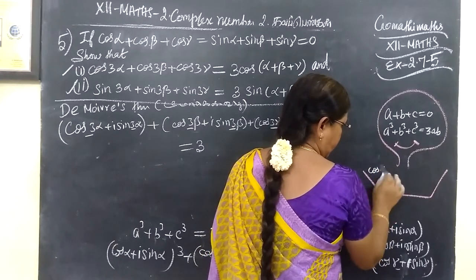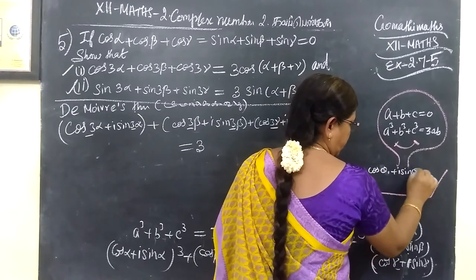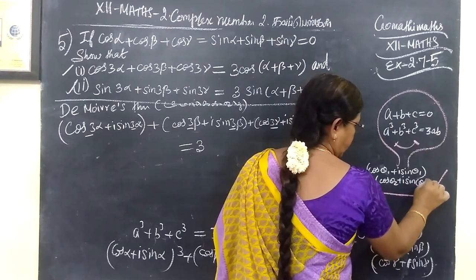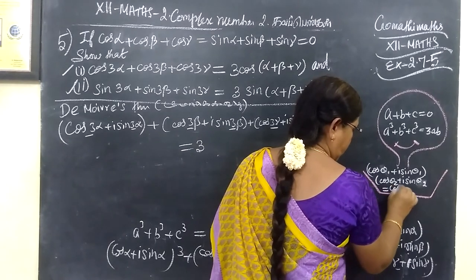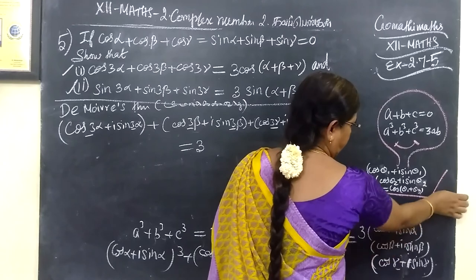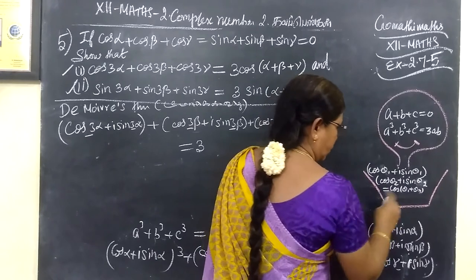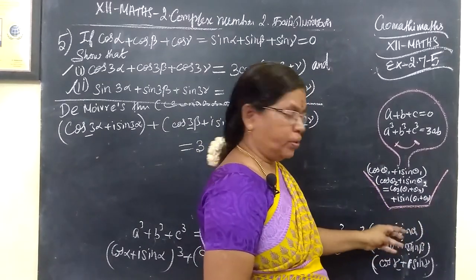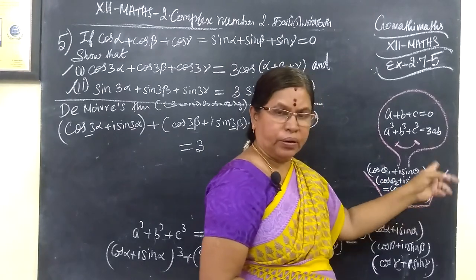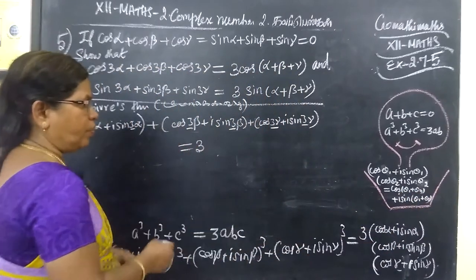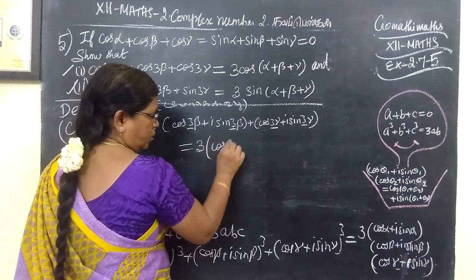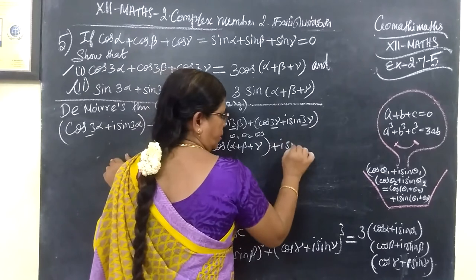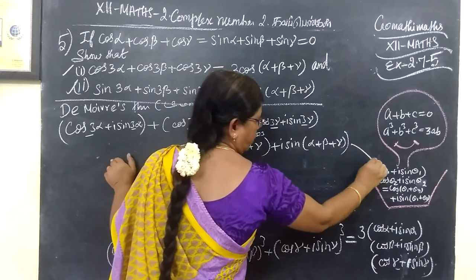We know the product formula: (cos θ₁ + i sin θ₁)(cos θ₂ + i sin θ₂) = cos(θ₁ + θ₂) + i sin(θ₁ + θ₂). We can extend this to a third angle θ₃ as well. So the product gives cos(α + β + γ) + i sin(α + β + γ).